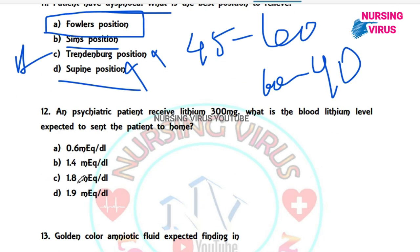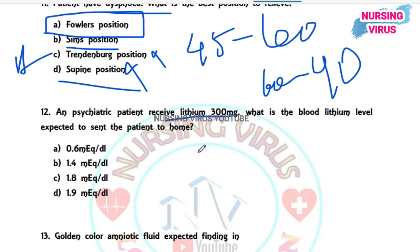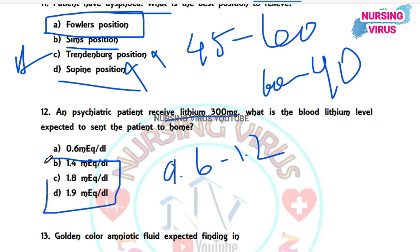Question 12: A psychiatric patient receives lithium 300 mg. What blood lithium level is expected before sending the patient home? The normal therapeutic level of lithium is 0.6 to 1.2 mEq/L; levels above this indicate toxicity. The correct answer is 0.6 mEq/L as the safe therapeutic level.